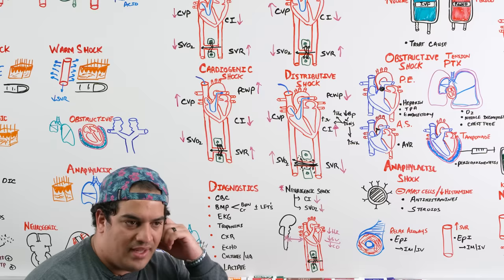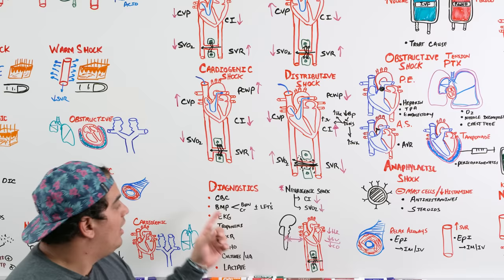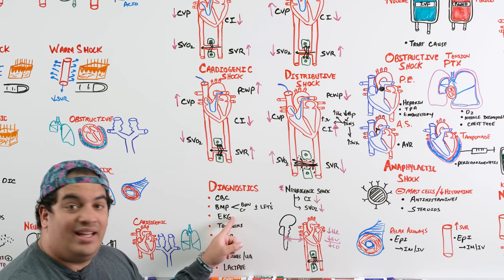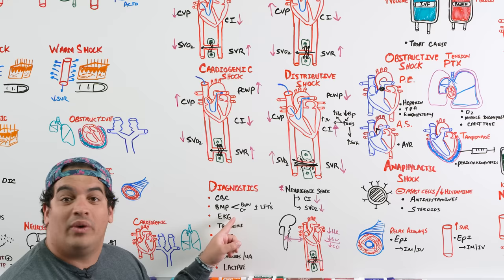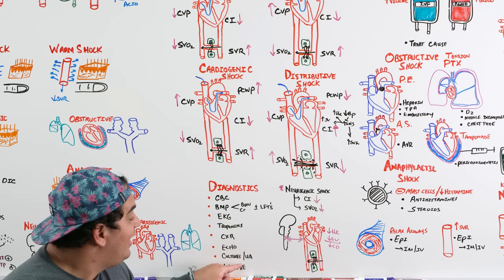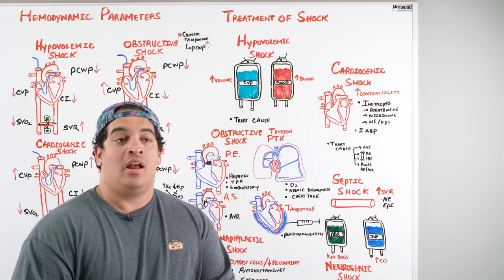Additional diagnostics: CBC — elevated WBC suggests septic shock. BUN/creatinine — elevated indicates kidney injury. LFTs — elevated indicates liver injury. EKG — ST elevation (MI), arrhythmias. Troponins — cardiac injury. Chest X-ray — tension pneumothorax. Echo — wall motion abnormalities, heart failure, tamponade. Cultures and urinalysis for infection. Lactate — marker of anaerobic metabolism and end organ dysfunction.